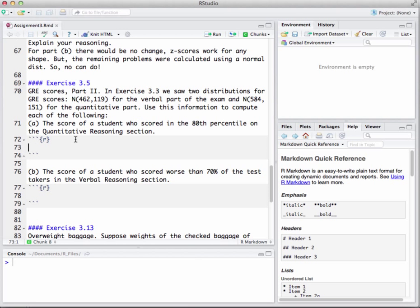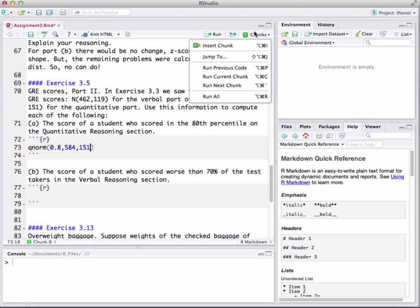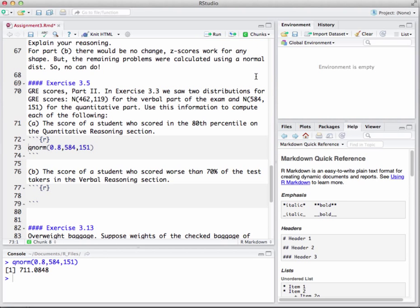So I've already opened up a chunk down here. I got it all ready to go. And I just got to type in Q norm. Put in 0.8, just to make it look like a 0.8 there. And then we'll put in our mean, which is 584. And then our standard deviation, which is 151. Let's go ahead and run that chunk, just so we can see what that came out to be. And it tells us that the score is 711.0848. So basically 711.